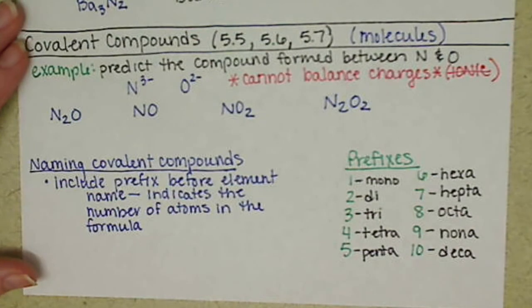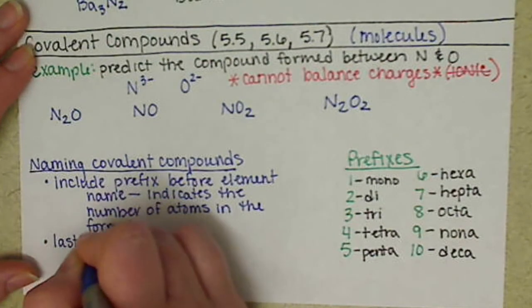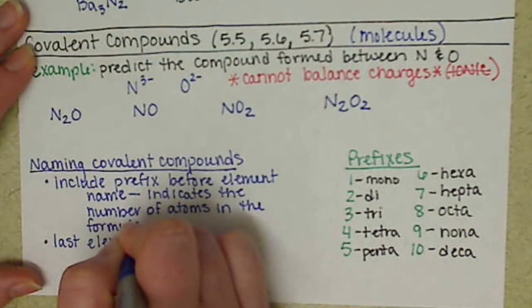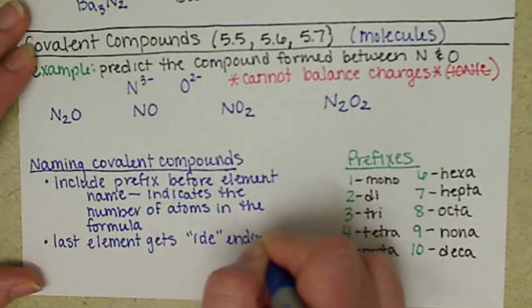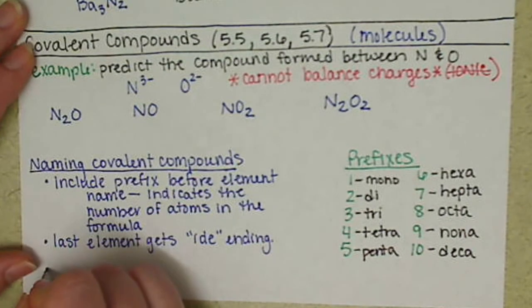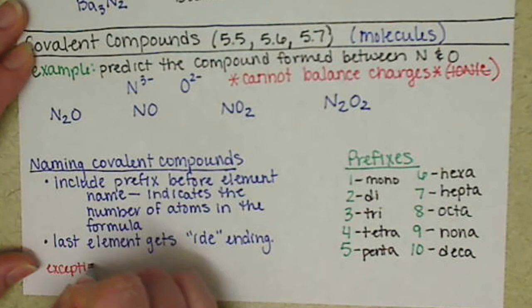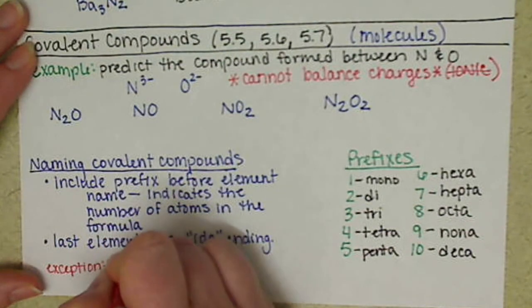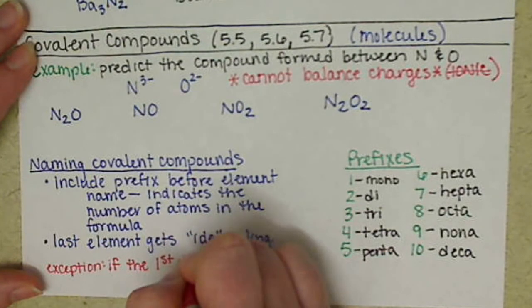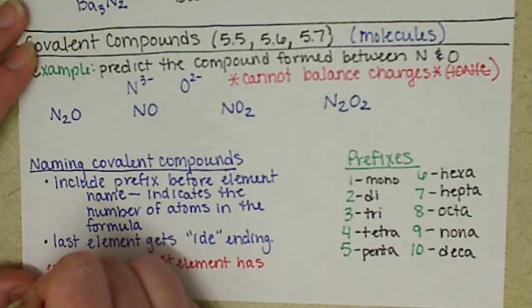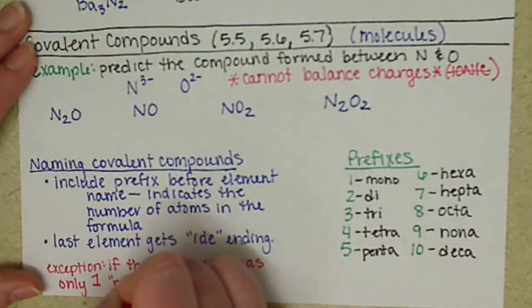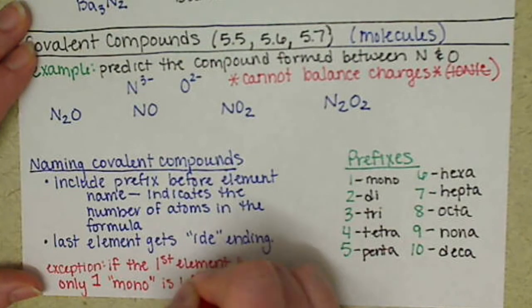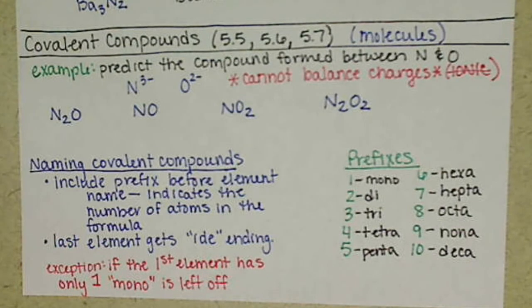So we use these in front of our element names to say how many are there. And then the last element gets the ide ending. And there is one exception. And that is, if the first element has only one, a subscript of one, the mono is left off. And that's only for the first element.